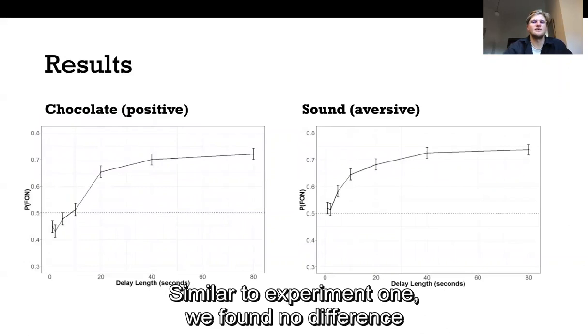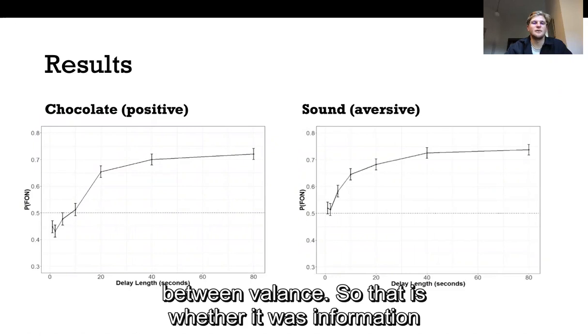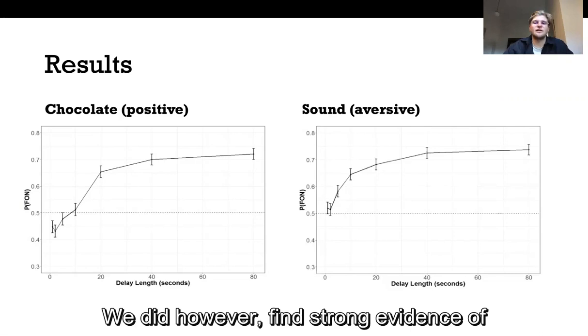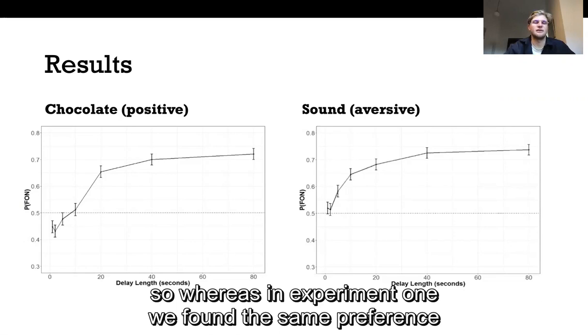Now moving on to the results. Similar to experiment one we found no difference between valence. So that is whether it was information about chocolate coming up or information about this aversive sound. At longer delays people wanted to know what was coming.